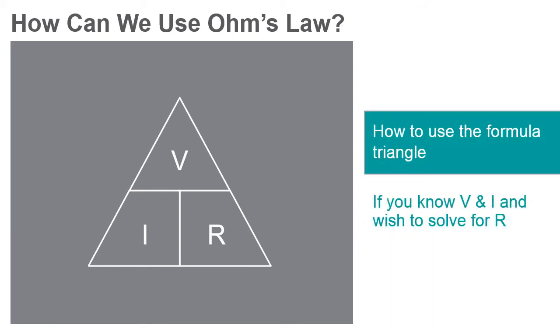If you know the values for V and I and wish to determine R, just eliminate R from the picture and see what's left. R equals V over I.